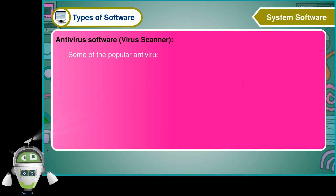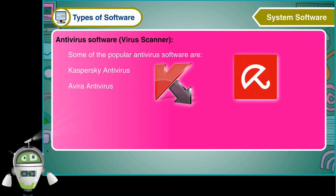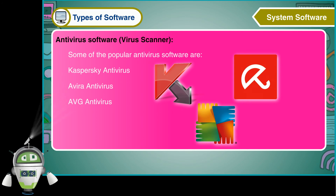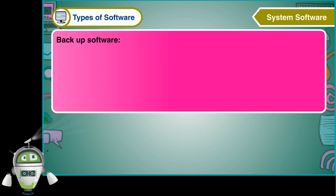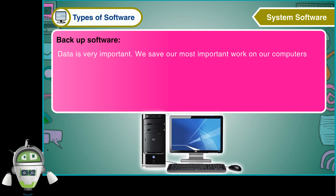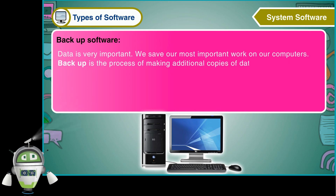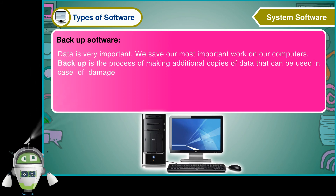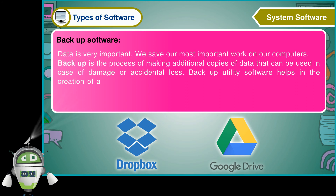Some of the popular antivirus software are Kaspersky Antivirus, Avira Antivirus, AVG Antivirus, and McAfee VirusScan. Data is very important. We save our most important work on our computers. Backup is the process of making additional copies of data that can be used in case of damage or accidental loss. Backup utility software helps in the creation of a backup of the files on our computer.